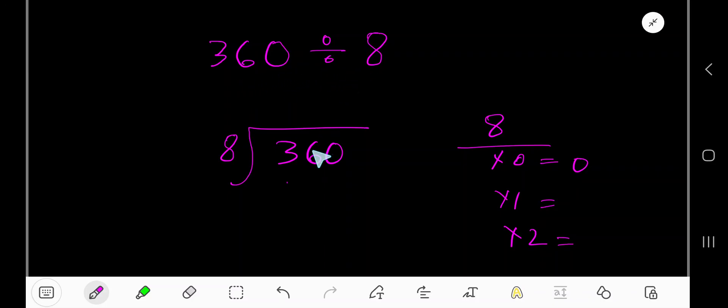360 divided by 8. Divide 360 by 8. 8 goes into 3 how many times? Actually 0 times. 0 times 8 equals 0. If you subtract, you will get 3. Bring down the 6, giving us 36.